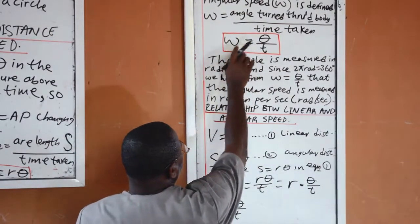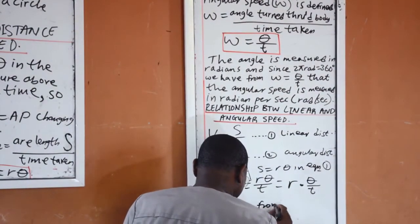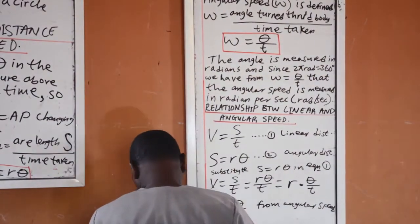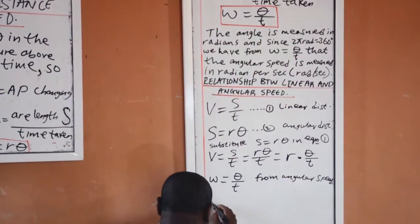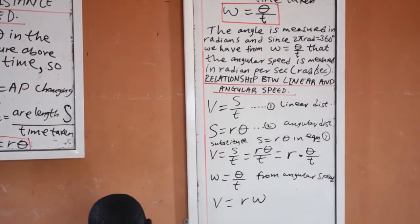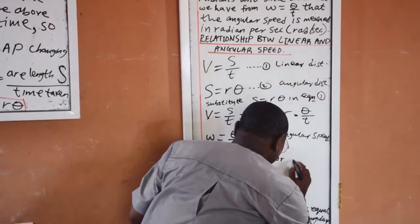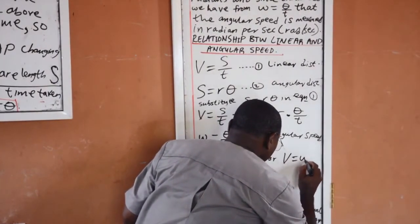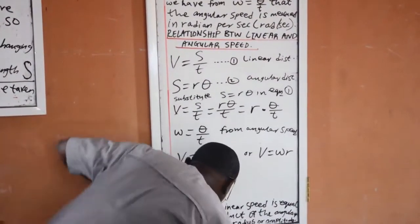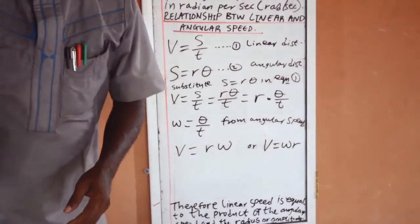From angular speed, therefore v is equal to r theta over t. Therefore v is equal to r omega, or v is equal to omega r. Therefore, linear speed is equal to the product of angular speed and the radius of amplitude.